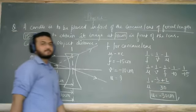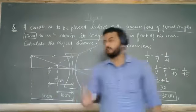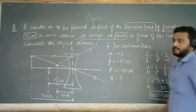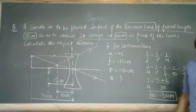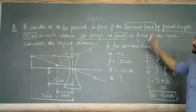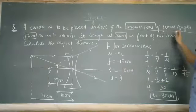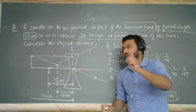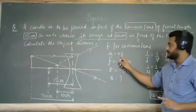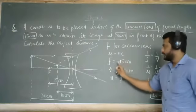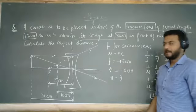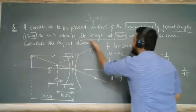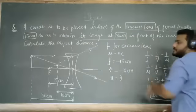What did we do? We identified it as a concave lens and noted its focal length of 15 cm. Remember, the concave lens focal length is negative, so it is minus 15. The image is formed in front of the lens — 'obtain its image at 10 cm in front of the lens' — so image distance is minus 10 cm.